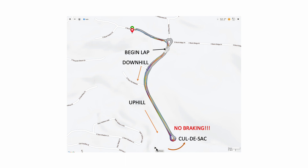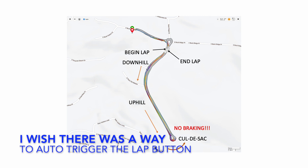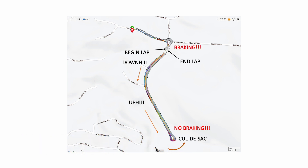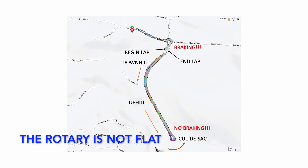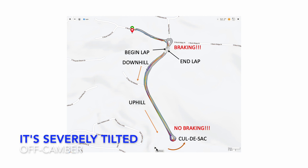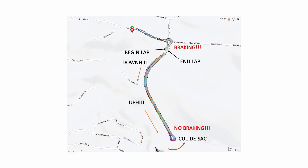Once around the cul-de-sac, the uphill becomes a downhill and vice versa. When I get back to the exact same point where I began my lap, I hit the lap button again to end the lap. After that, there's a rotary where I need to brake because I can't get around it without braking — I'd flip the Velomobile over. That portion is beyond the end of the lap, so I don't take that information. I go around that rotary and when I reach the begin lap position, I hit the lap button again.